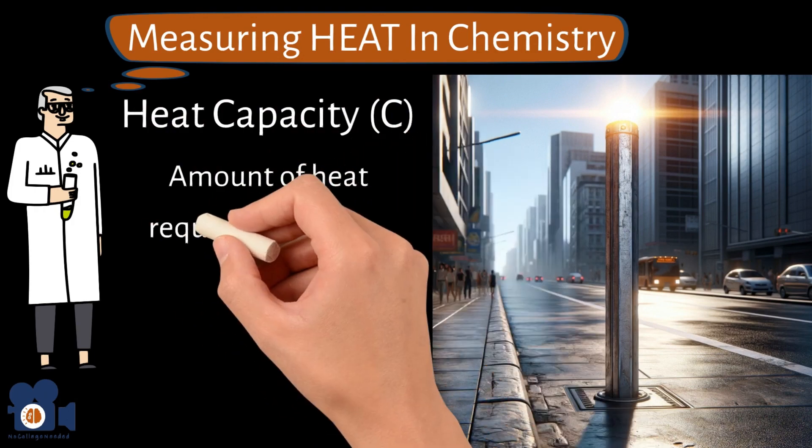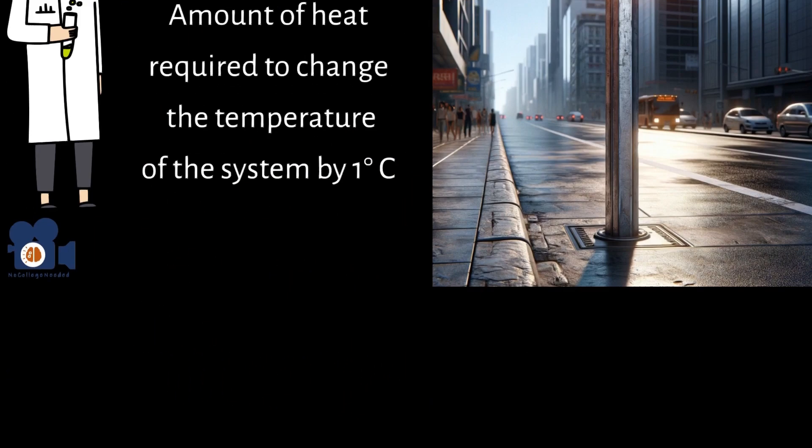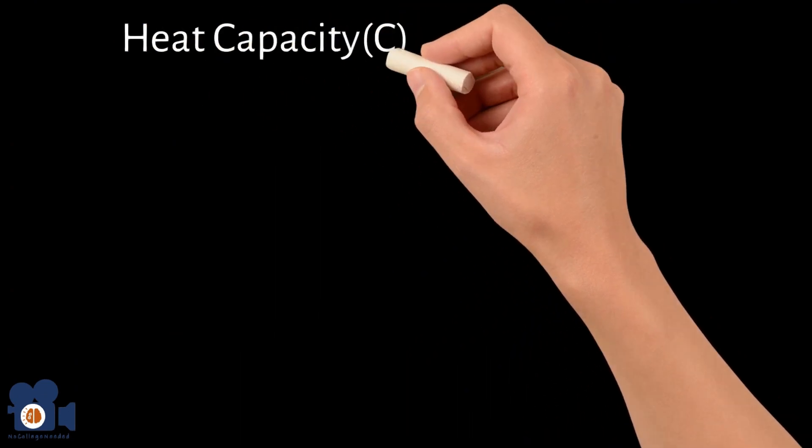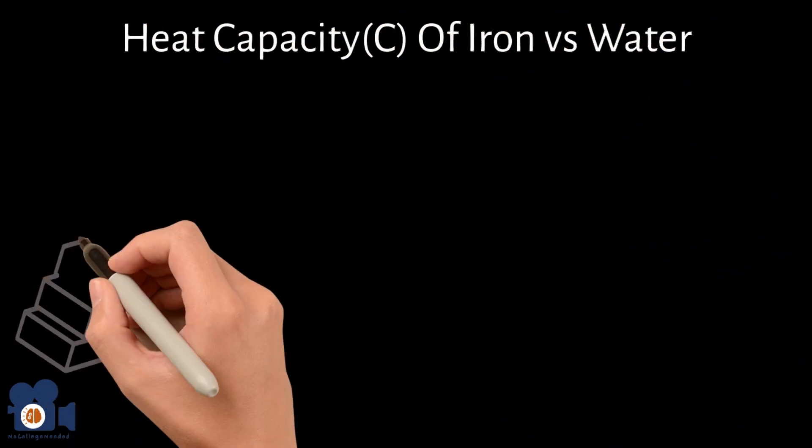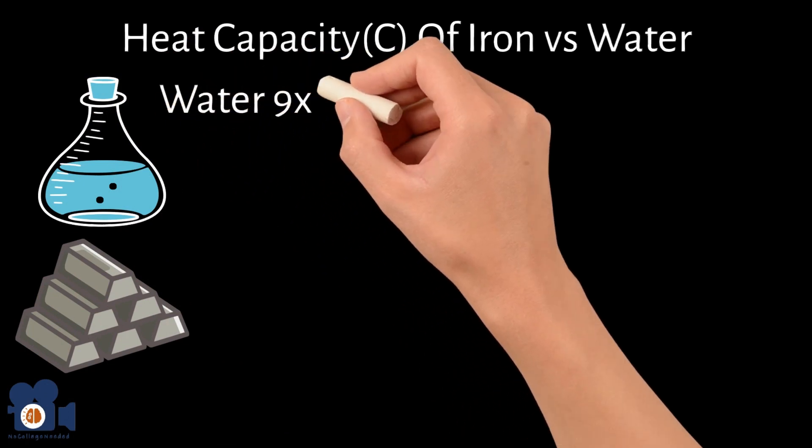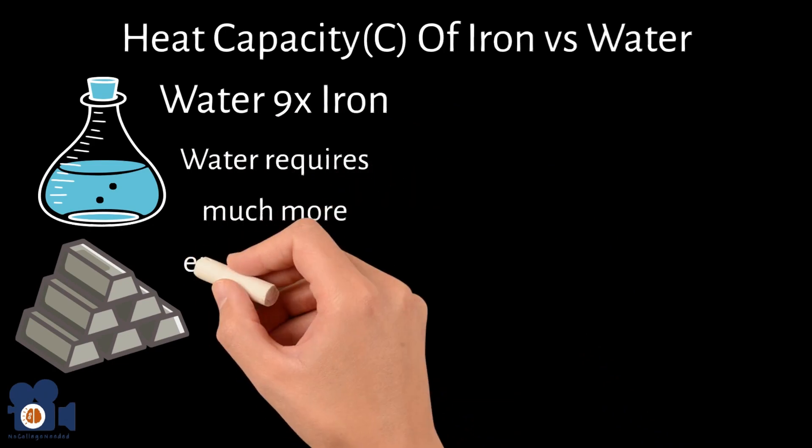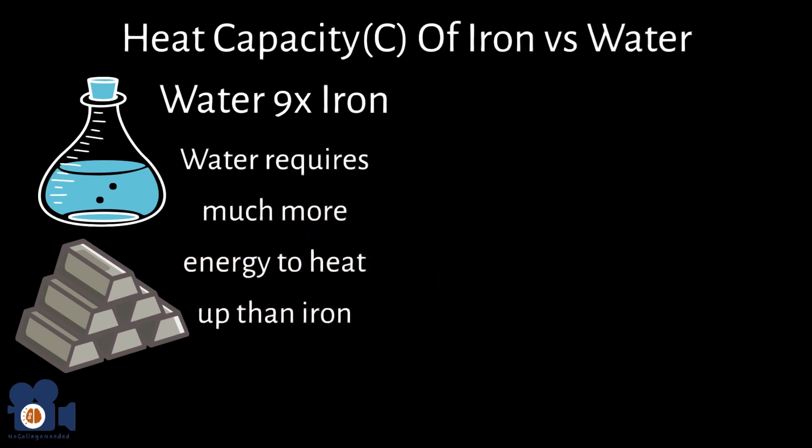Heat capacity is the amount of heat required to change the temperature of the system by one degree Celsius. If you compare the heat capacity of iron versus water, we find that water has a heat capacity that is roughly nine times higher than that of iron. This means that water requires much more energy to change its temperature compared to an equal mass of iron, which is one of the reasons why an iron pole is so much hotter than a puddle.